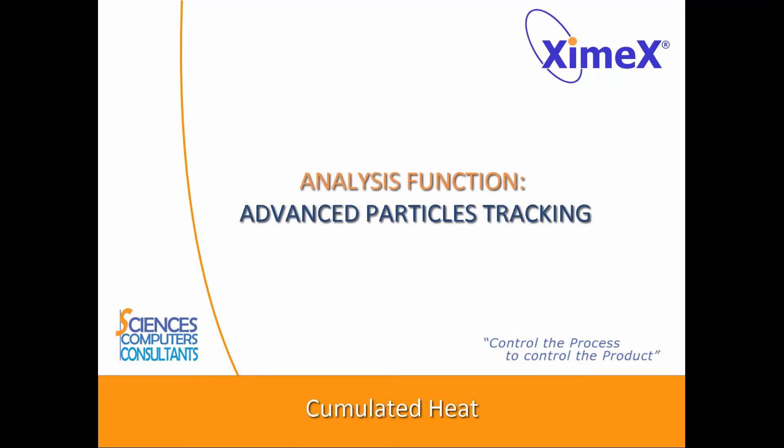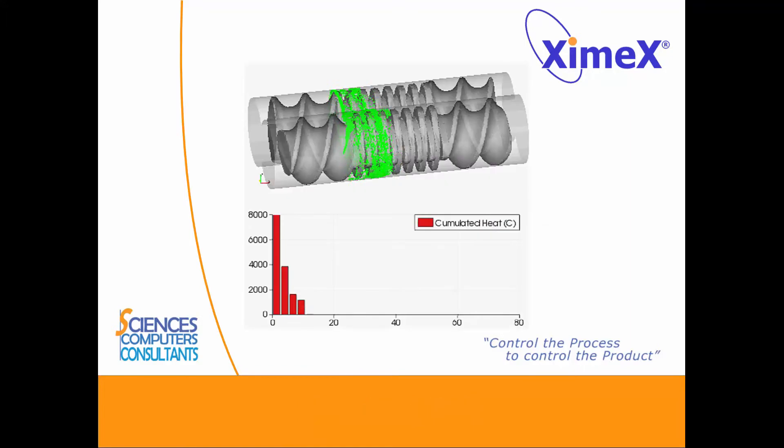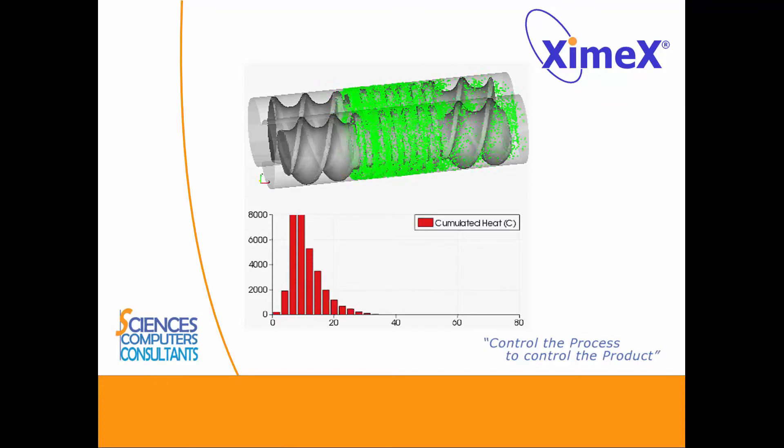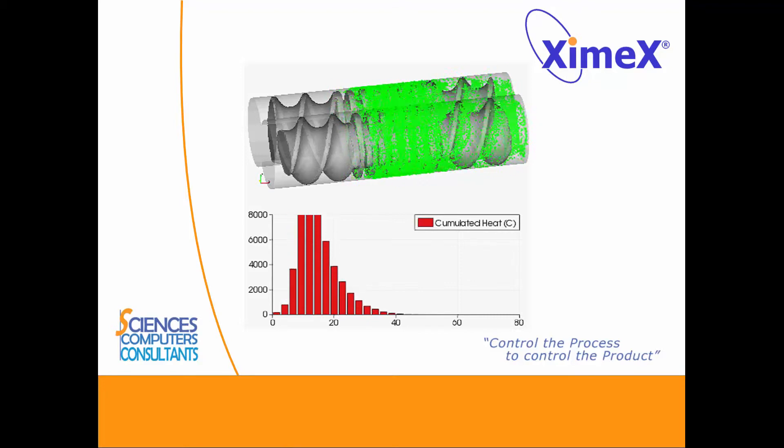The accumulated heat is a marker of dispersive mixing and represents the self-heating of material due to mechanical heating caused by kneading blocks. It is a key result to take into account for temperature-sensitive material.